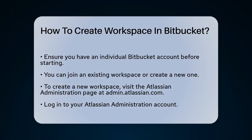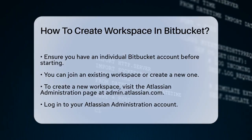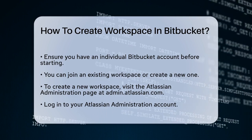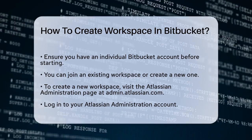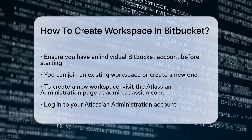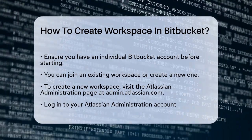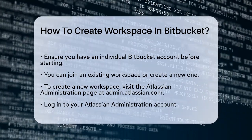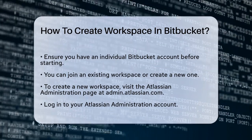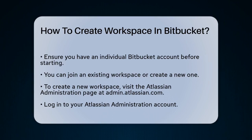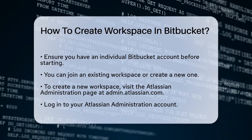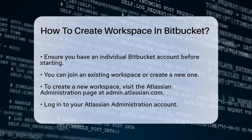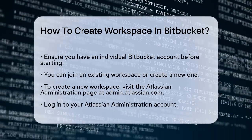Once you have your account, you can either join an existing workspace or create a new one. To create a new workspace, go to the Atlassian Administration page at admin.atlassian.com. Log in to your Atlassian Administration account and select the Products tab at the top. Here you'll find an Add Product button — click on it and select Bitbucket from the list of products.